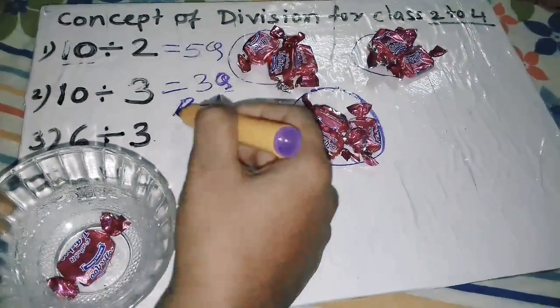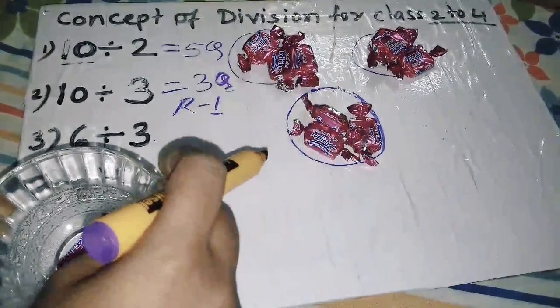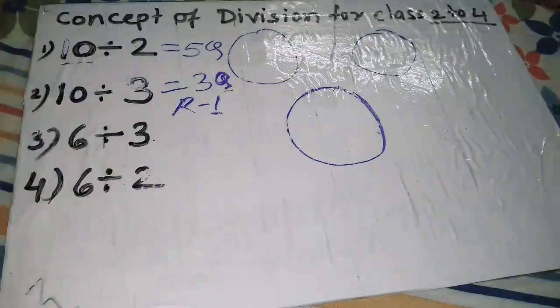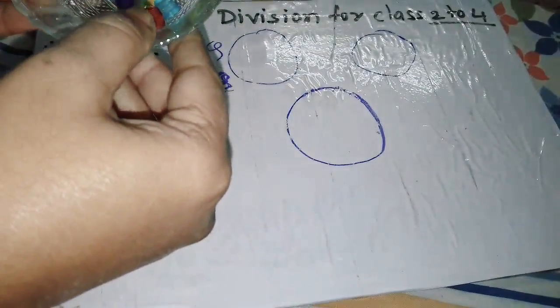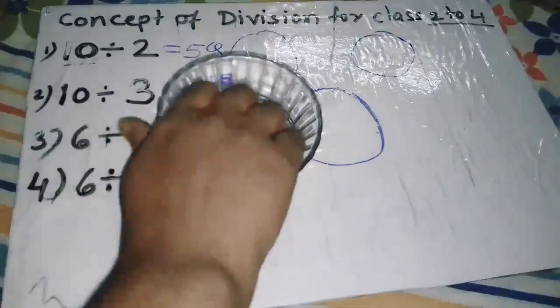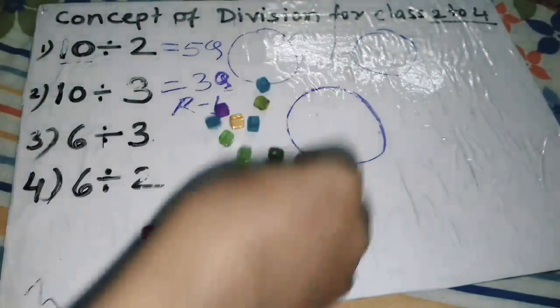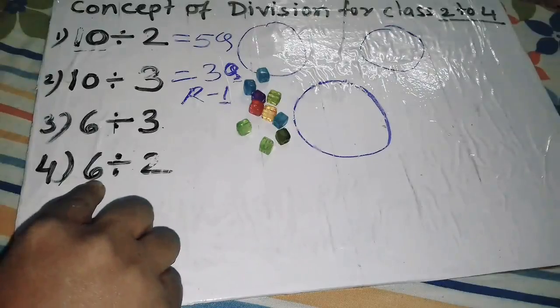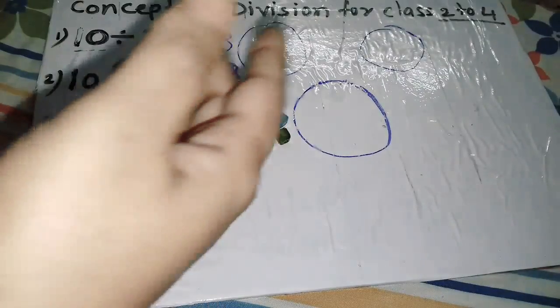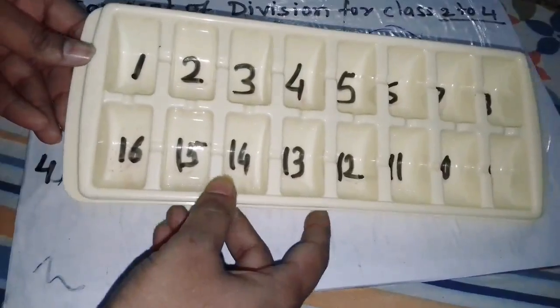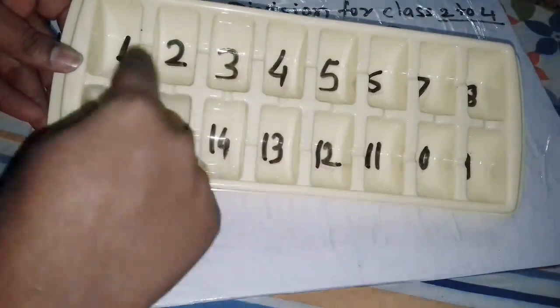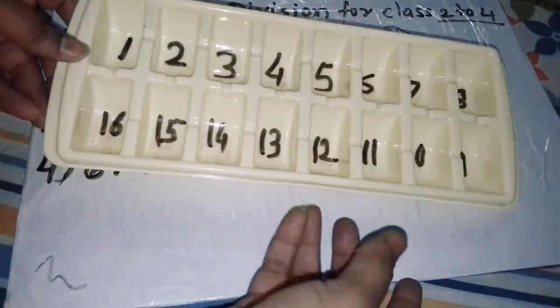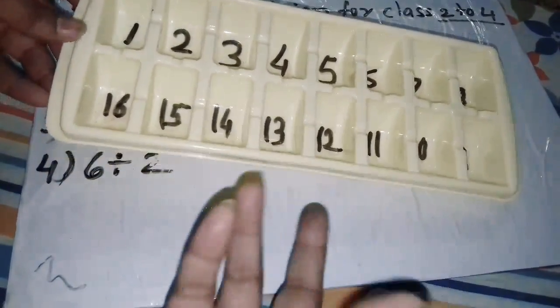This activity can be done by another activity also. Here I have 10 beads. Now for 6 divided by 2, I have an ice tray and I have given numbers to each compartment, 1 to 16. You can use a small or big ice tray.